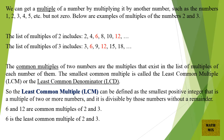Below are examples of multiples of the numbers 2 and 3. The list of multiples of 2 includes 2, 4, 6, 8, 10, 12, and so on. The list of multiples of 3 includes 3, 6, 9, 12, 15, 18, and so on.